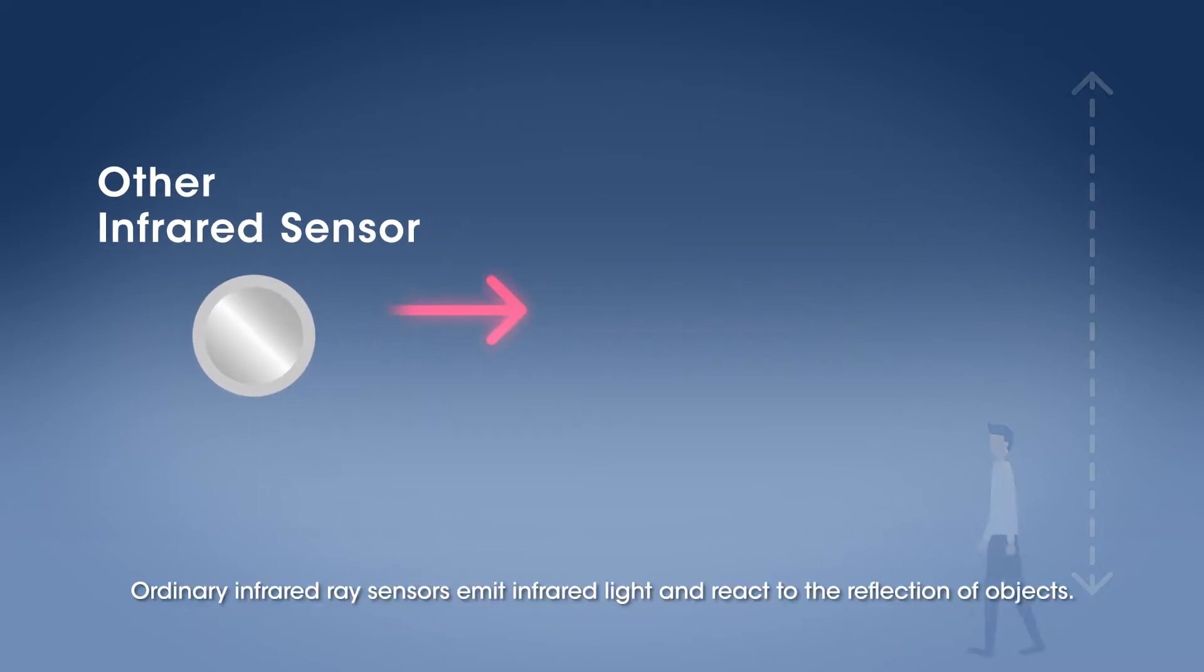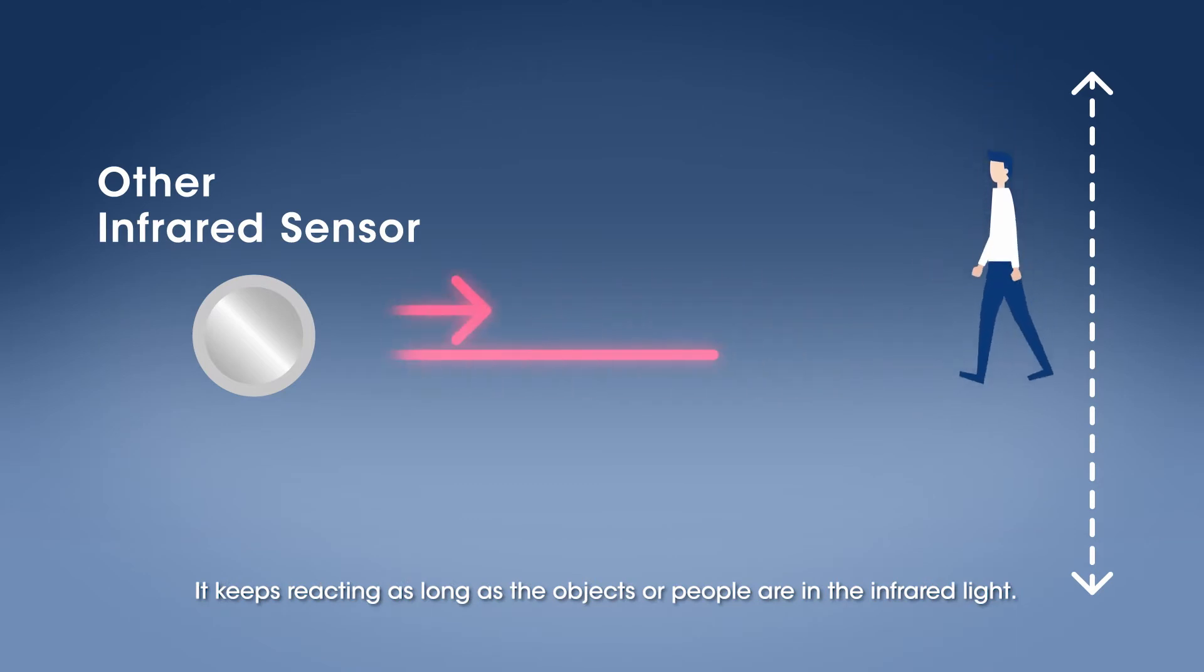Ordinary Infrared Ray Sensors emit infrared light and react to the reflection of objects. It keeps reacting as long as the objects or people are in the infrared light.